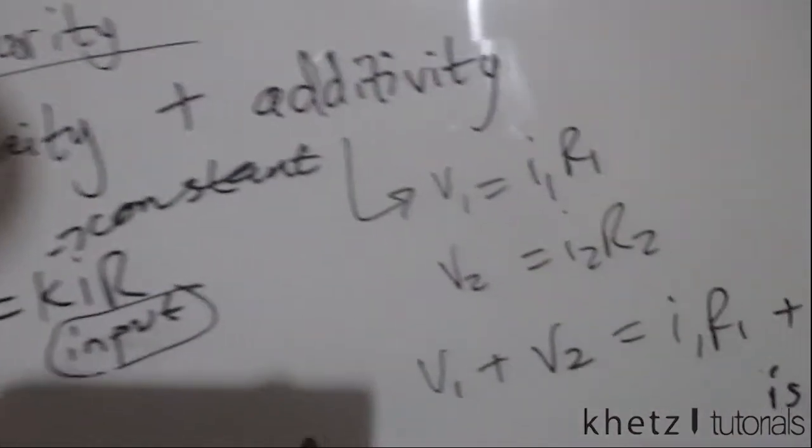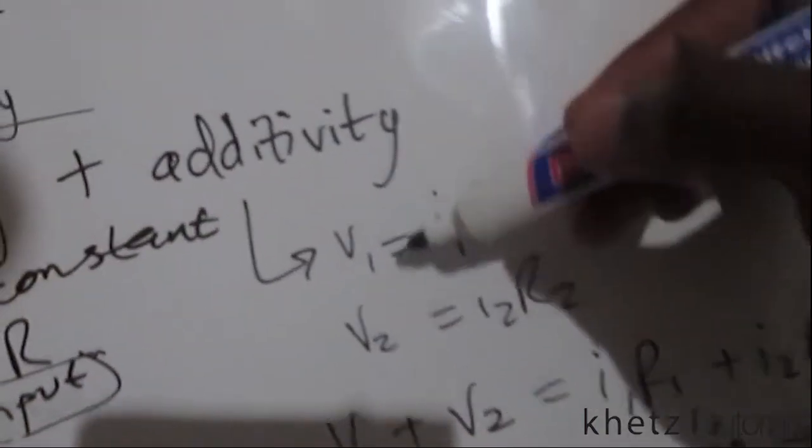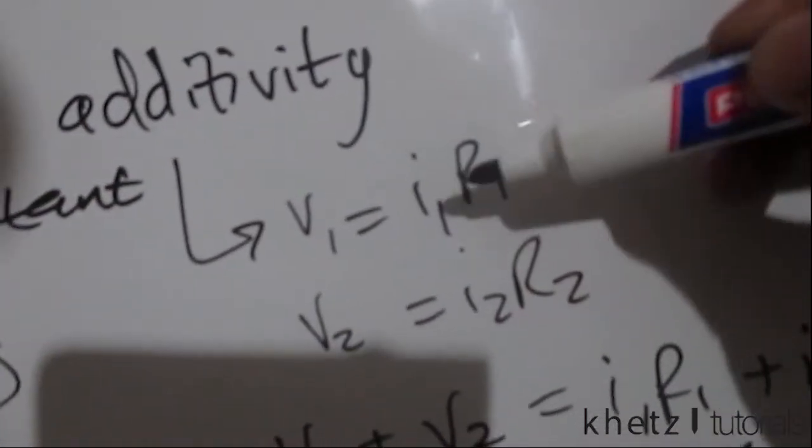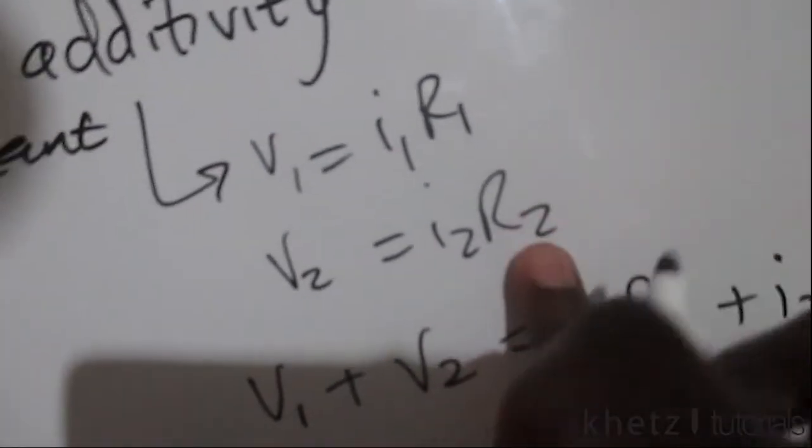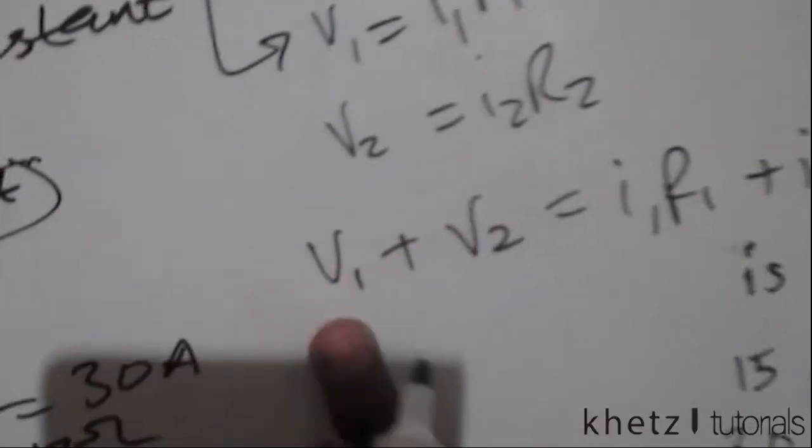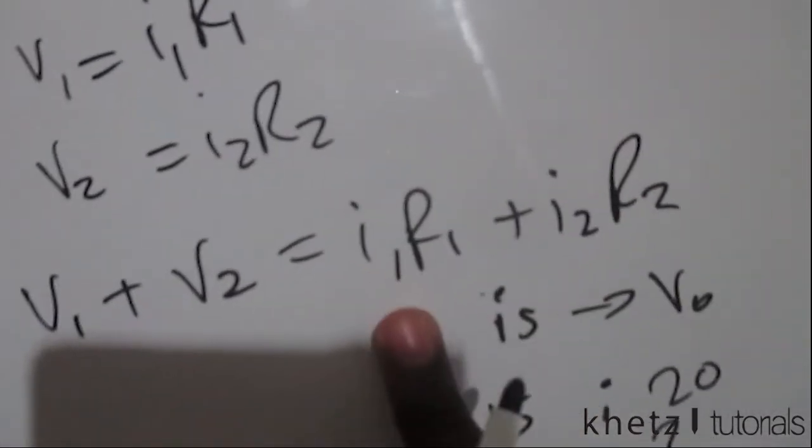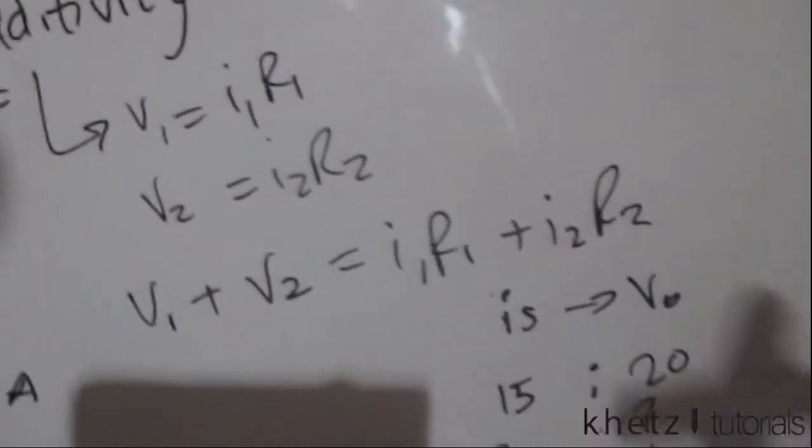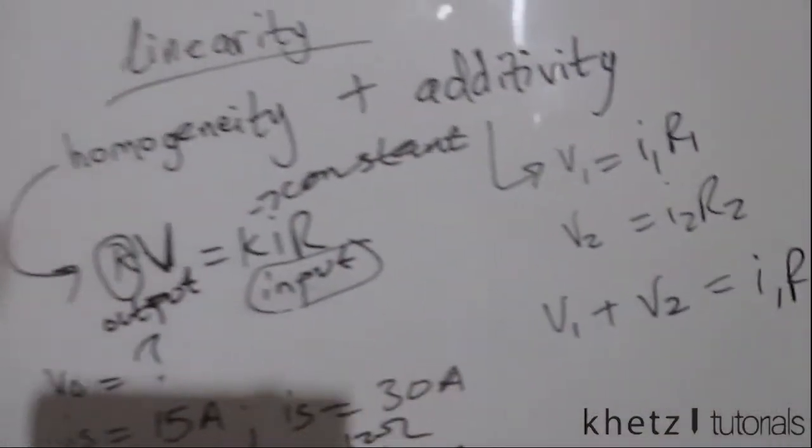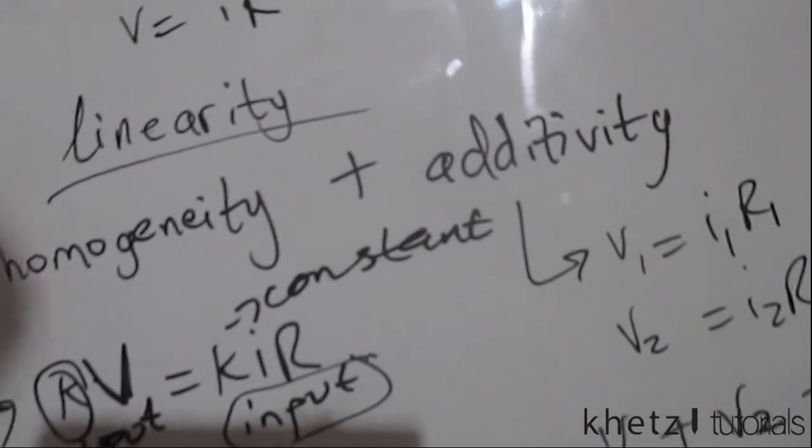And on the additivity side we are saying if V1 equals I1 multiplied by R1 and V2 equals I2 multiplied by R2, then V1 plus V2 equals I1R1 plus I2R2. So these are the two parts of the linearity property.